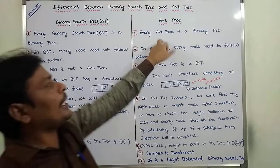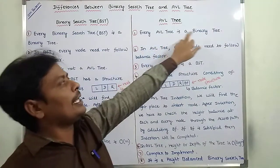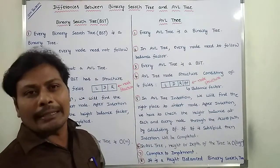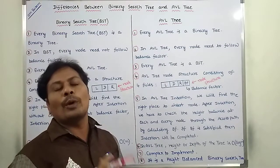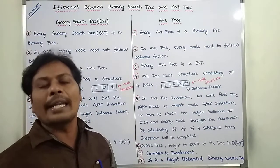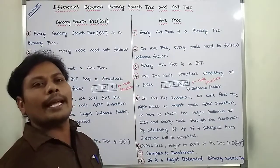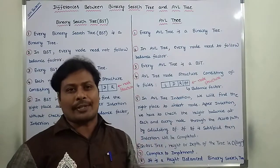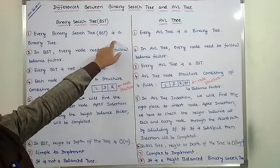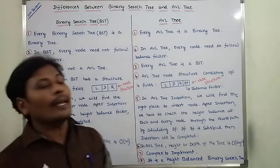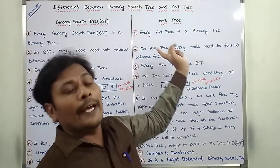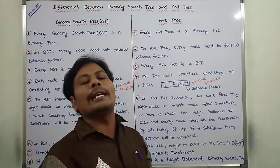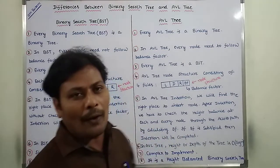Now for AVL tree: every AVL tree is a binary search tree and also a binary tree. Because in the AVL tree, we have to follow the binary search tree property. Hence, every AVL tree is a binary search tree, and since every binary search tree is a binary tree, every AVL tree is also a binary tree.